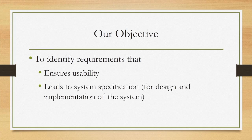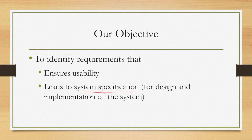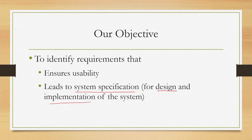Along with identifying requirements, this stage — requirement gathering, analysis, and specification — has two more components: analysis and specification. Whatever usability requirements we gather, we need to analyze them so we can convert them to a system specification that will make it possible to design and implement the system. So there are two objectives: identification of requirements, and specification through analysis of those identified requirements.